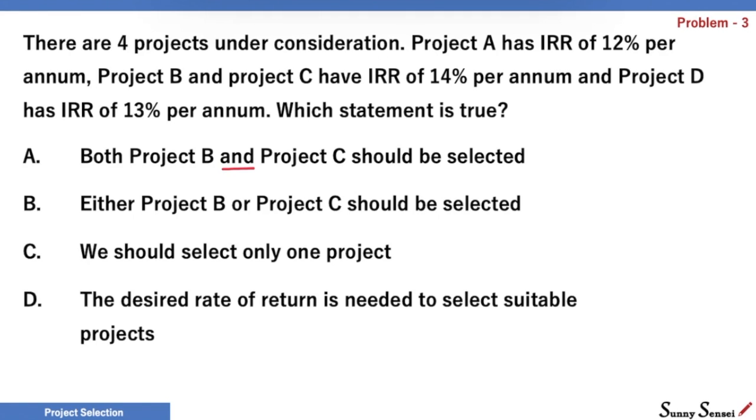Choice B is Project B or Project C. Still, we don't know if the IRR is good enough. Choice C: We should select only one project. Why just one? If multiple projects meet our financial objectives, we can pick more than one. But only if we have enough resources: people, money, time, etc. Our resources limit our ability to take all the viable projects.